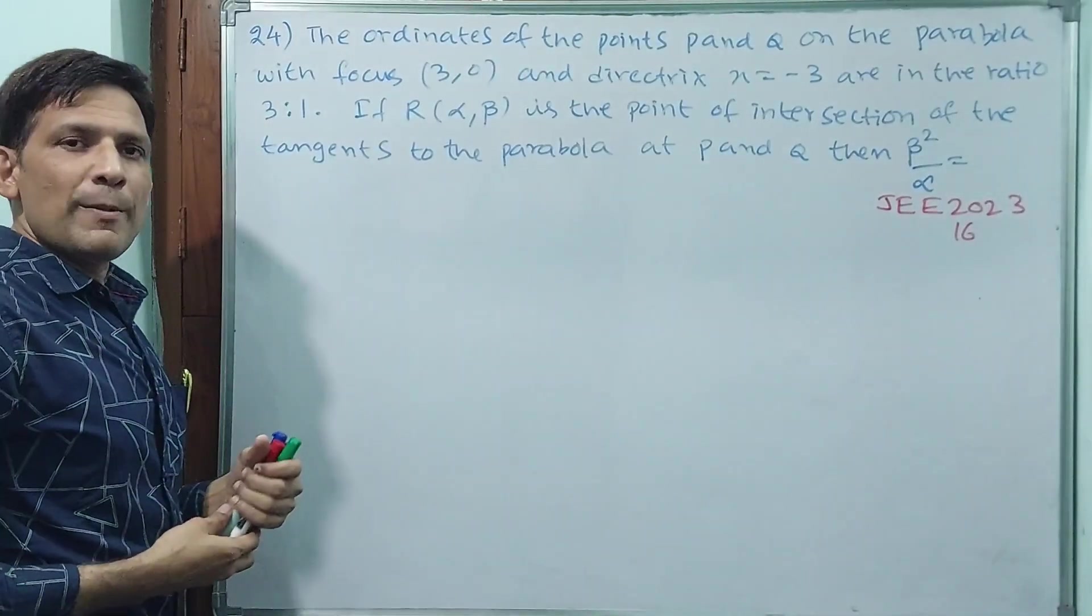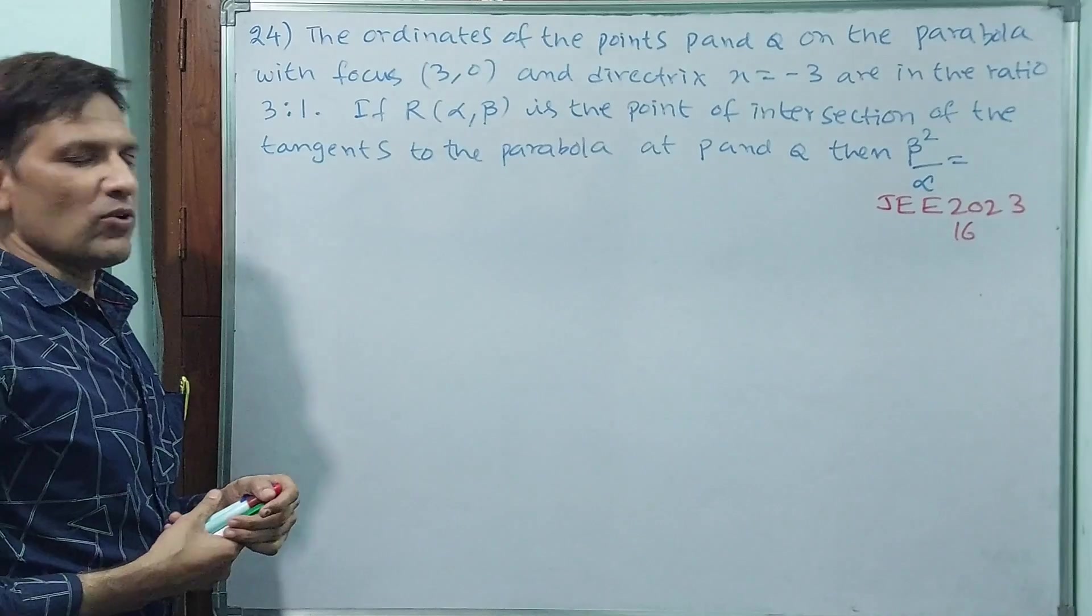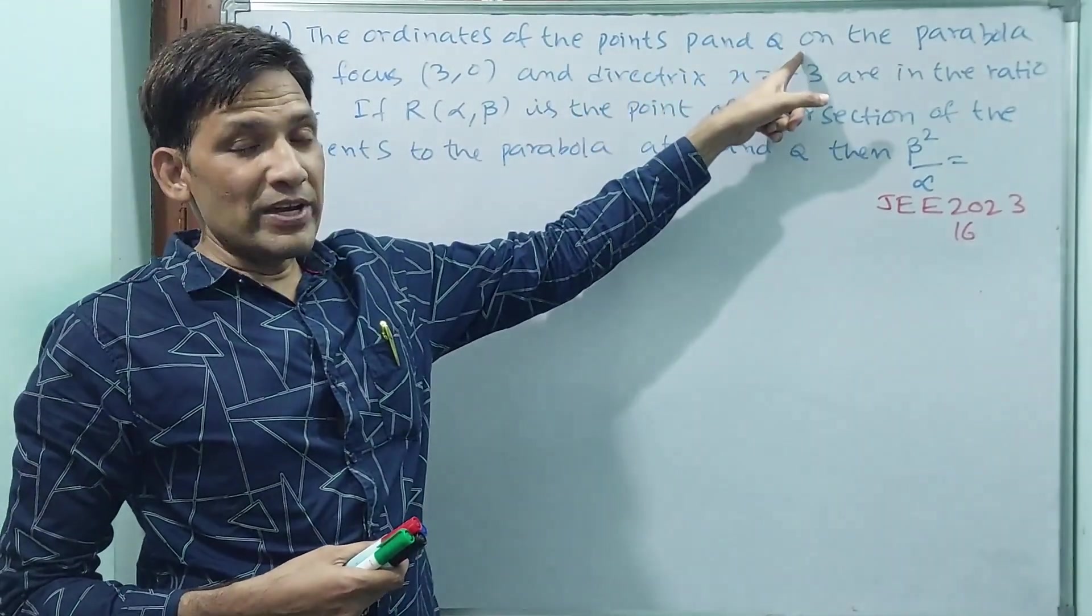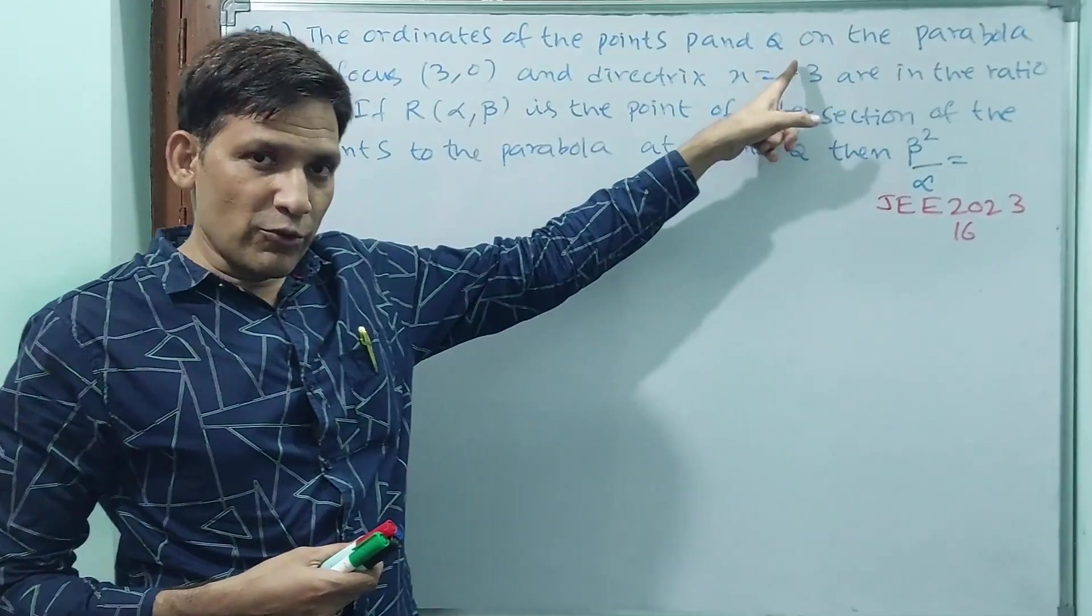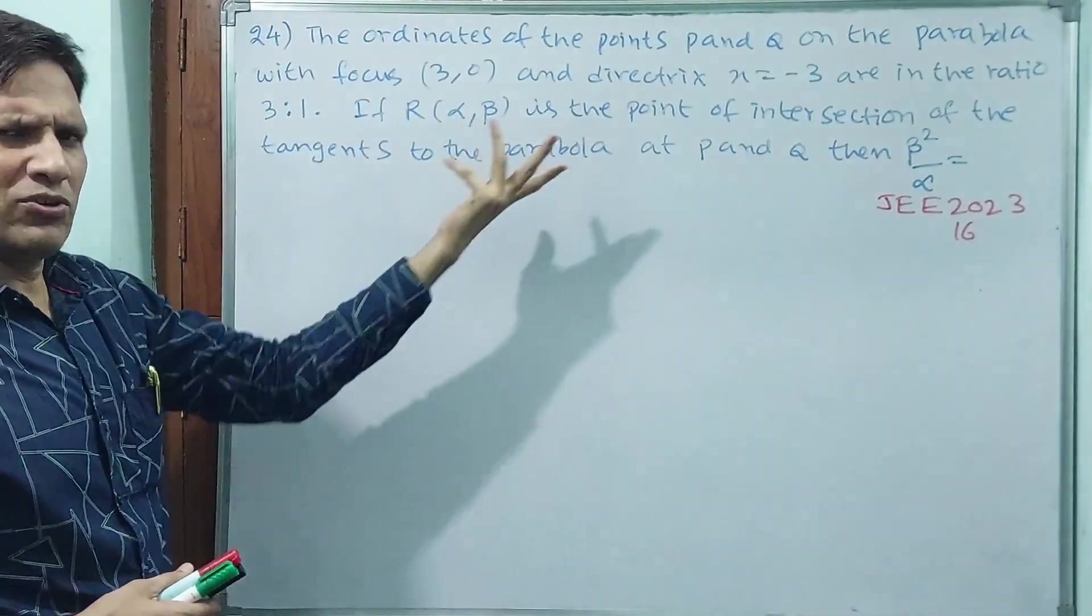What do we call ordinates? Y coordinate. X is the x coordinate. The y coordinate of P and Q are in the ratio of 3:1. They are related, but even though not a problem.